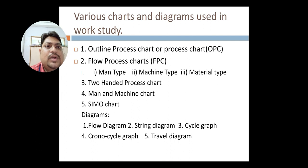Third one is two-handed process chart. Workers are generally doing the work by using both hands. So at a particular work or particular process, what their both hands are doing. By this way, this chart works.